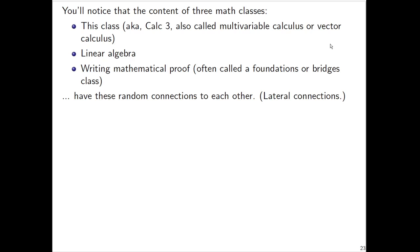You may have noticed that the contents of three math classes - this one (Calc 3, also called multivariable calculus or vector calculus), linear algebra, and writing mathematical proof (often called a foundations or bridges class) - have these random connections to each other. These are what I call lateral connections. I have designed this class to provide all the details to be successful even if you have never taken linear algebra or a class on how to write proofs. At the same time, there are connections, and it would be a shame to not point them out.